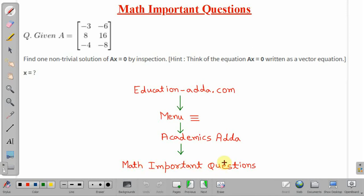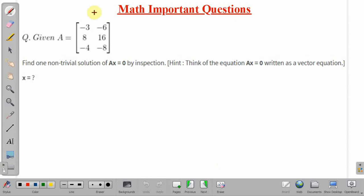Coming back to the question, what is given here? A matrix is given which has three rows and two columns. This is the given matrix and we have to find one non-trivial solution of A into x equal to 0 by inspection. Simply by inspection we have to find the value of x.